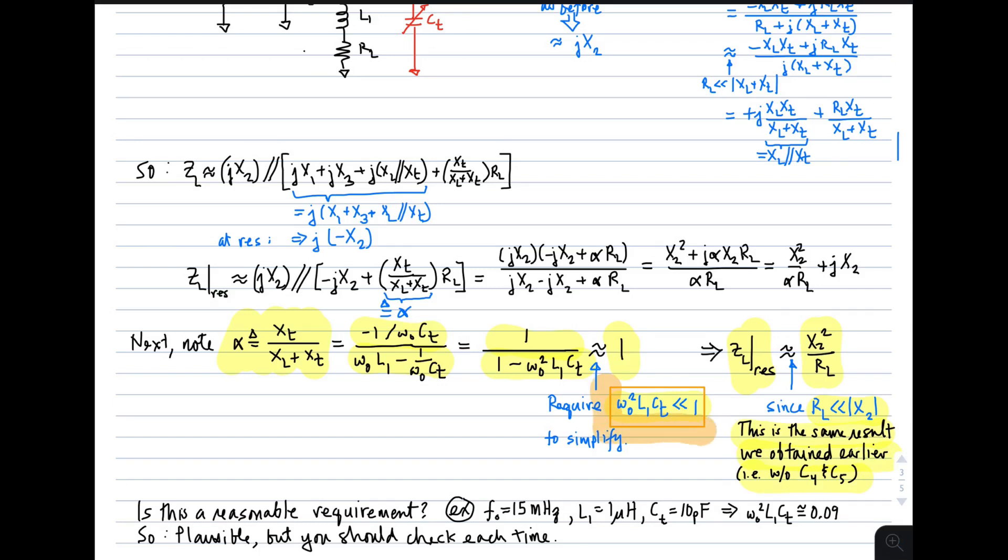Now is this a reasonable requirement? Well, let's just throw in some numbers. For a frequency of 15 megahertz, an inductor of 1 microhenry, a tuning capacitance of 10 pF, again those are three arbitrarily chosen numbers, but just to show you what happens, we get that this factor is just a little bit less than 0.1. So 0.1 is certainly much less than 1, so it's plausible. But you need to check this each time. Don't assume that it's always going to be the case. You should remember that you've made this assumption and then verify that it's correct.